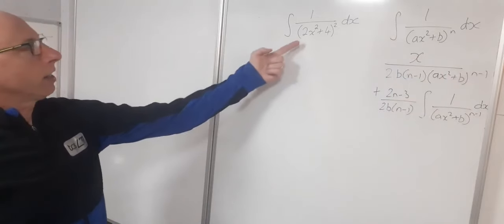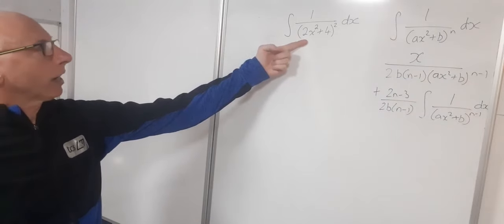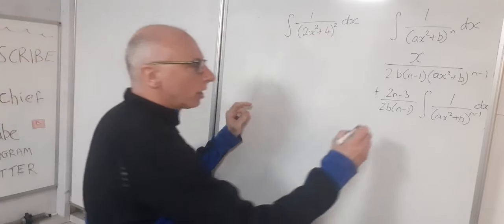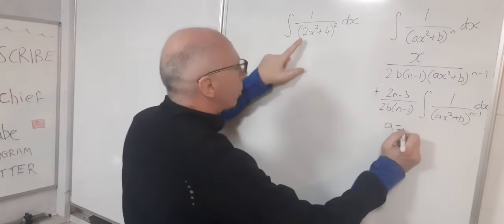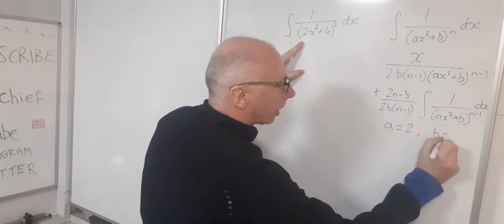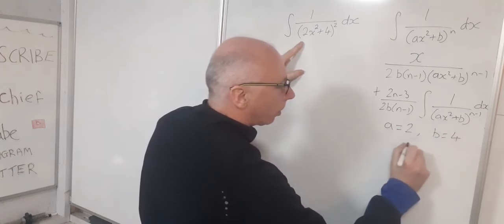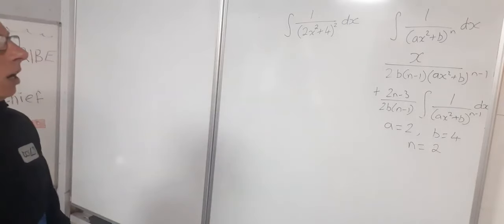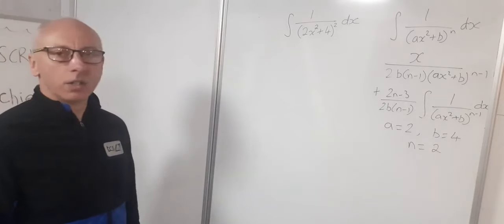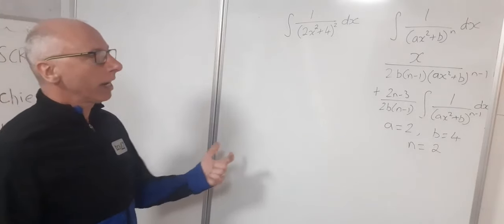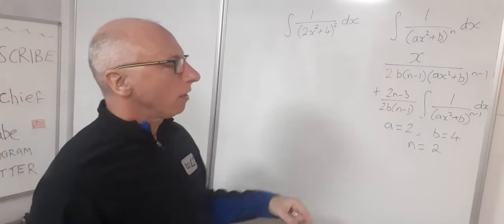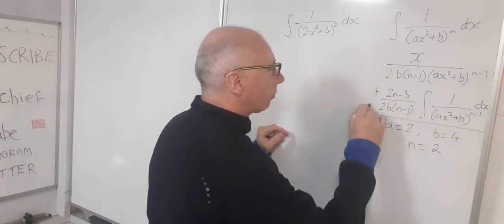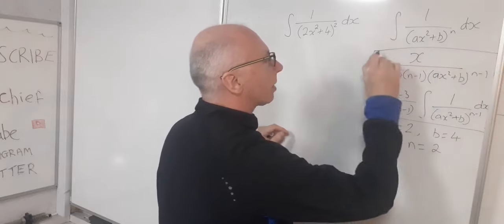Looking at our integral, we can straight away identify our values: a equals 2, b equals 4, and n equals 2. So let's go straight in and plug those values into our power reduction formula and see where that takes us.